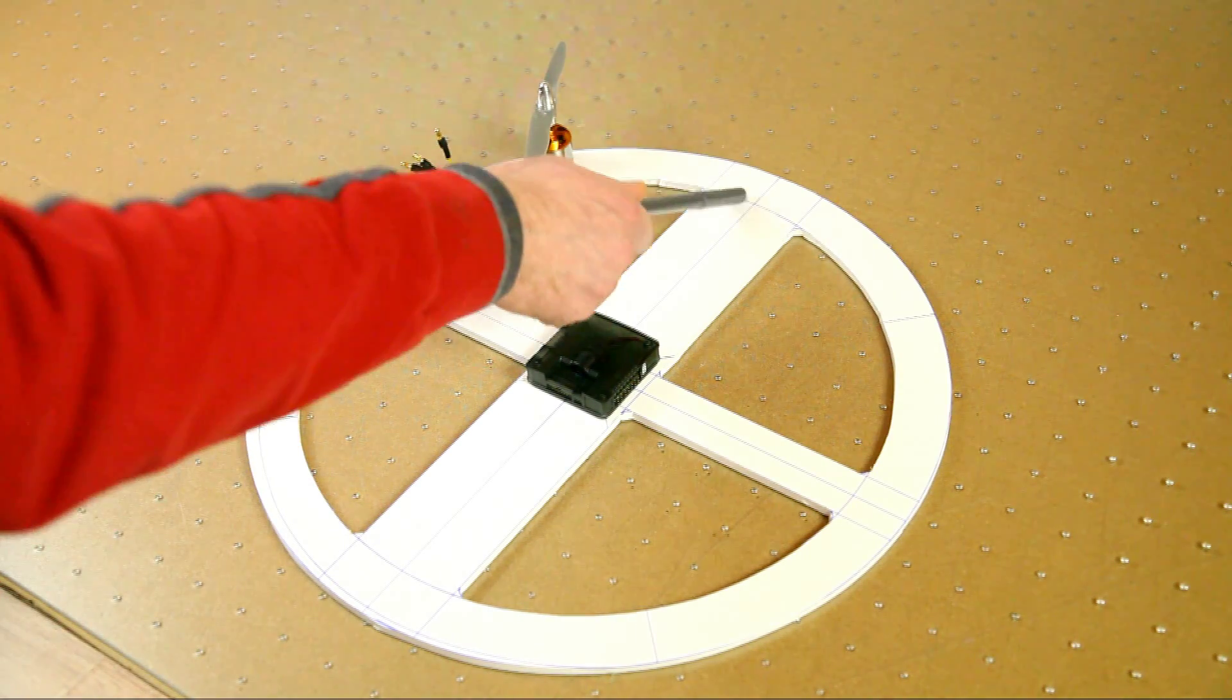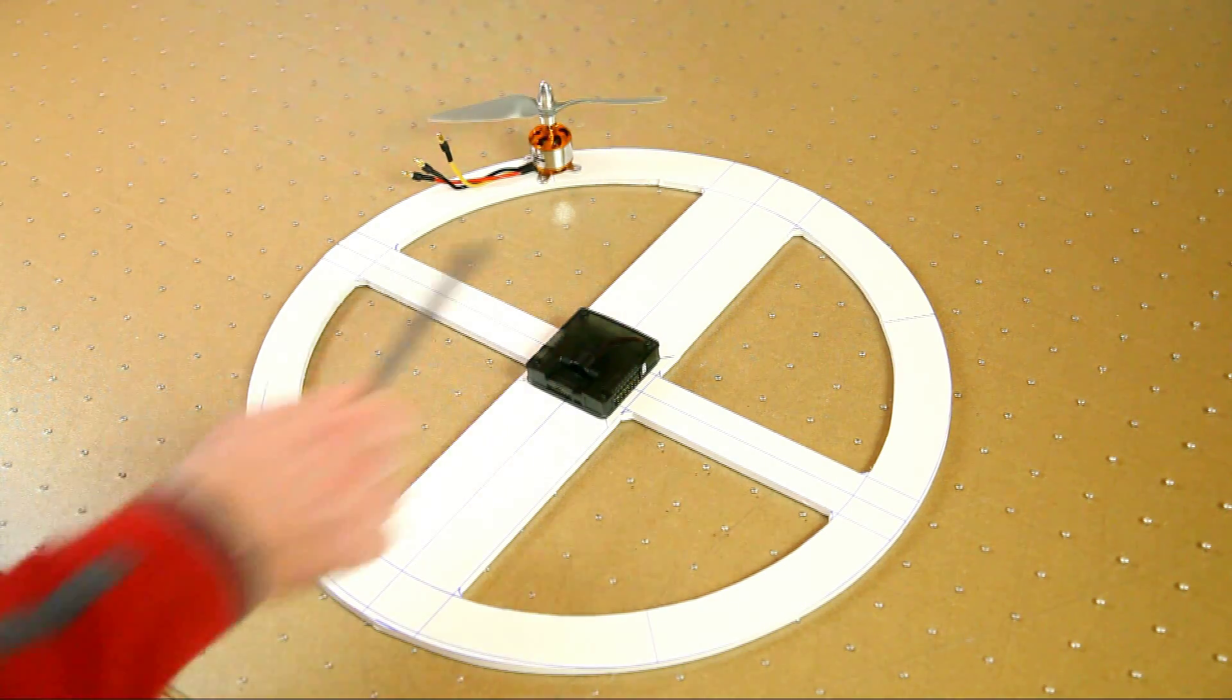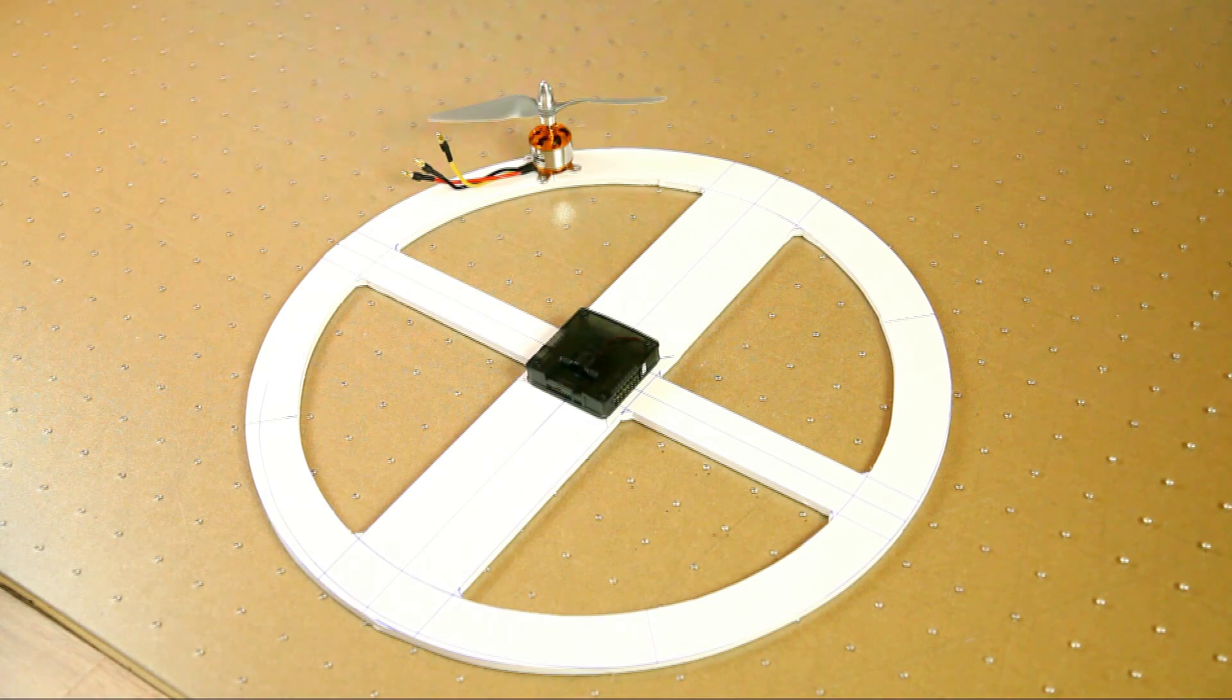There's more than enough space for a camera, and as you can see, the propellers won't be in the frame of the camera with this design. That's a convenient side effect of this design.